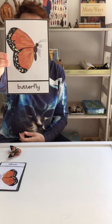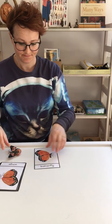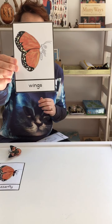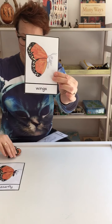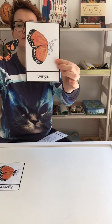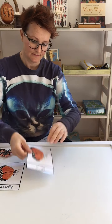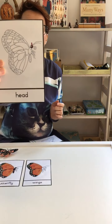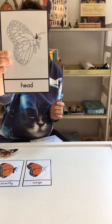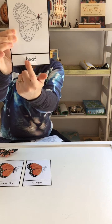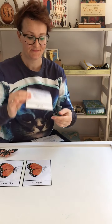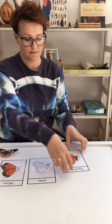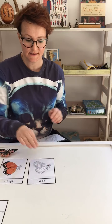This is our butterfly. The butterfly has beautiful wings. This part here on top, the brown part, is the head. Maybe we put it like this so you can see — wings and head.